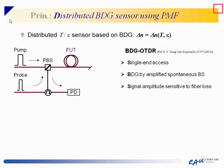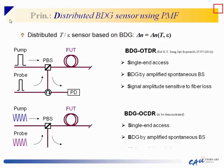Another demonstrated configuration is BDG-OTDR, similar to BOTDR, where single-end access is possible and BDG is generated by amplified spontaneous emission. However, the signal amplitude is quite sensitive to fiber loss. Another possible configuration not yet demonstrated is BDG-OCDA with single-end access, also using amplified spontaneous emission, potentially offering high spatial resolution.